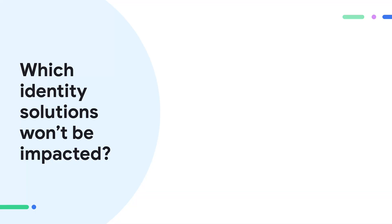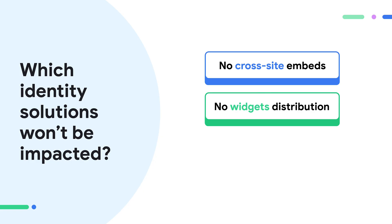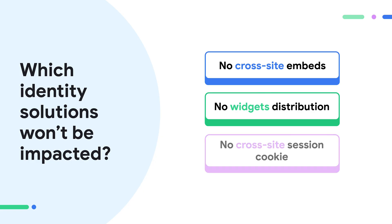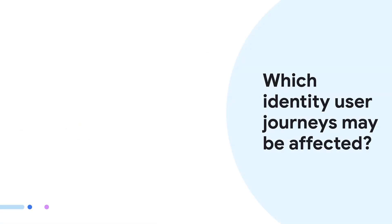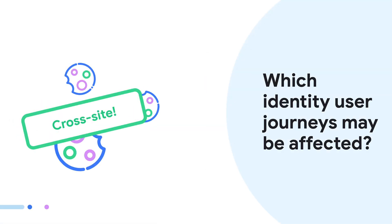Let's take a look at how you can ensure your identity solution works as expected for all of your users. First things first — not all cookies will cause breakages. Some identity flows rely on cookies that are set and accessed by the same site. If you don't embed any content, don't distribute embeddable cross-site widgets, and don't reuse the same session cookie across multiple sites, you probably don't need to update. But you still should investigate to make sure. The identity flows that may be impacted are those that rely on cross-site cookies.